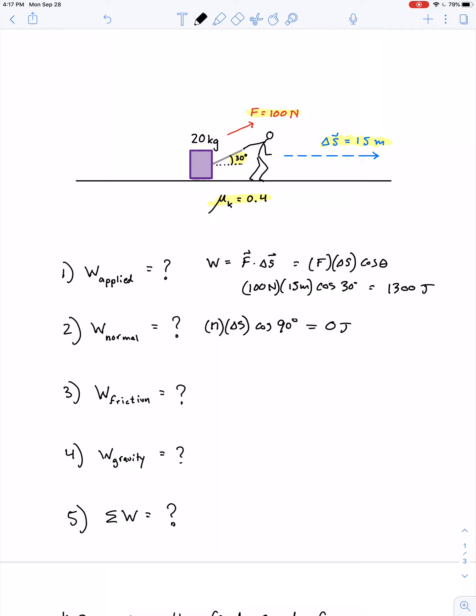The work done by the friction force is the magnitude of the friction force, which is mu N, multiplied by the magnitude of the displacement times the cosine of the angle between those vectors, which in this case is 180 degrees. So this part of the calculation is just going to give us a negative 1.